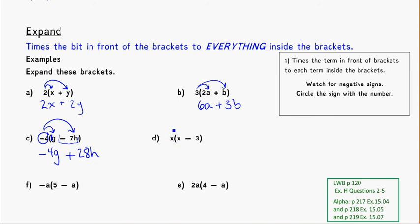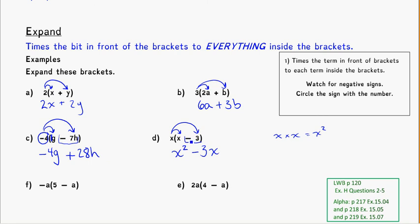Sometimes the thing out front can be a letter. Here I see the variable x, so I've got some unknown number of these things, and I'm going to do the same process — just times it straight through. x times x means x times x: I've got two x's, so that becomes x squared. And x times negative three — watching for that negative — gives me minus three x.